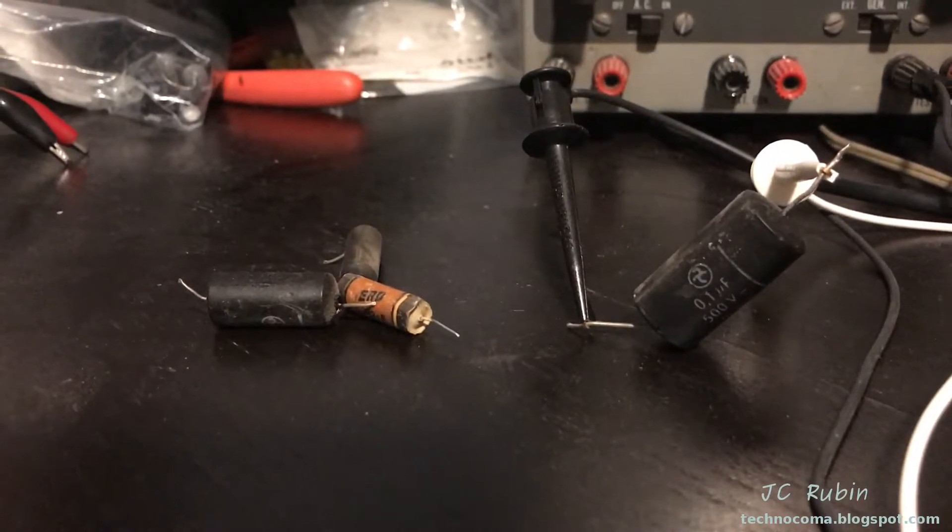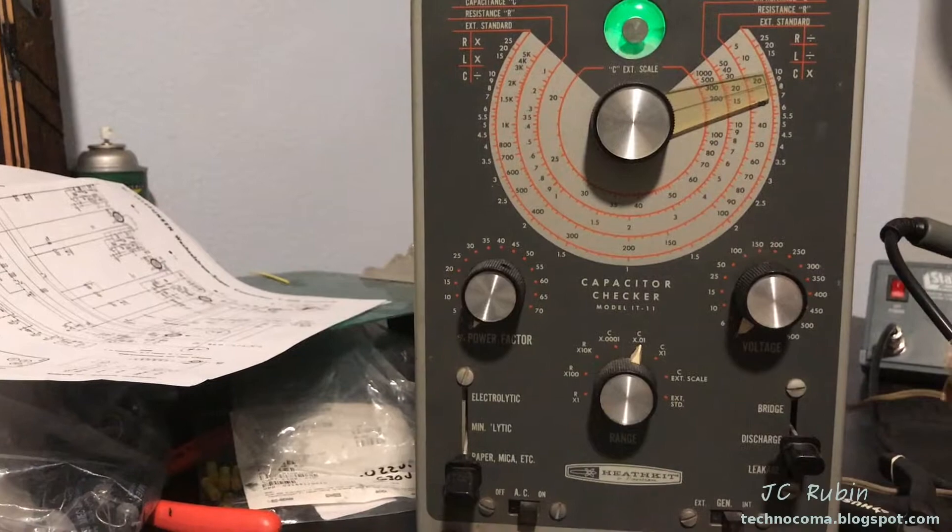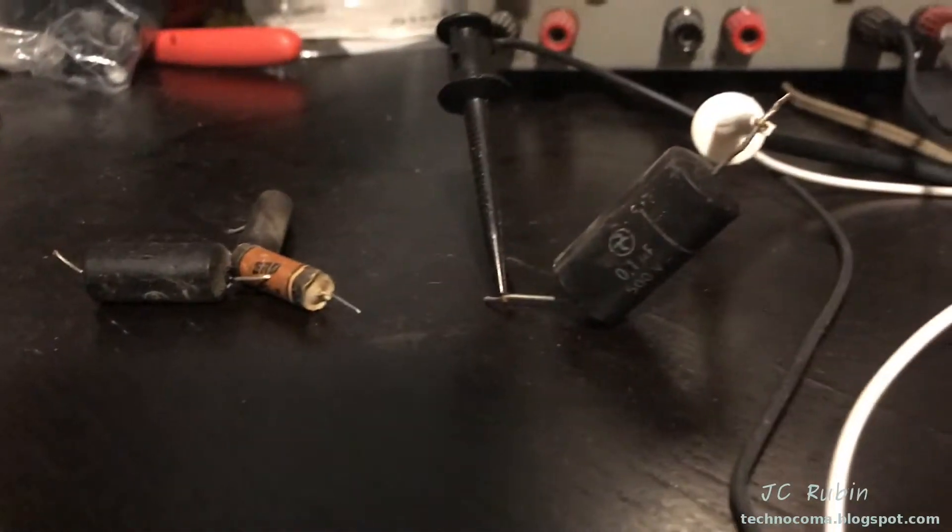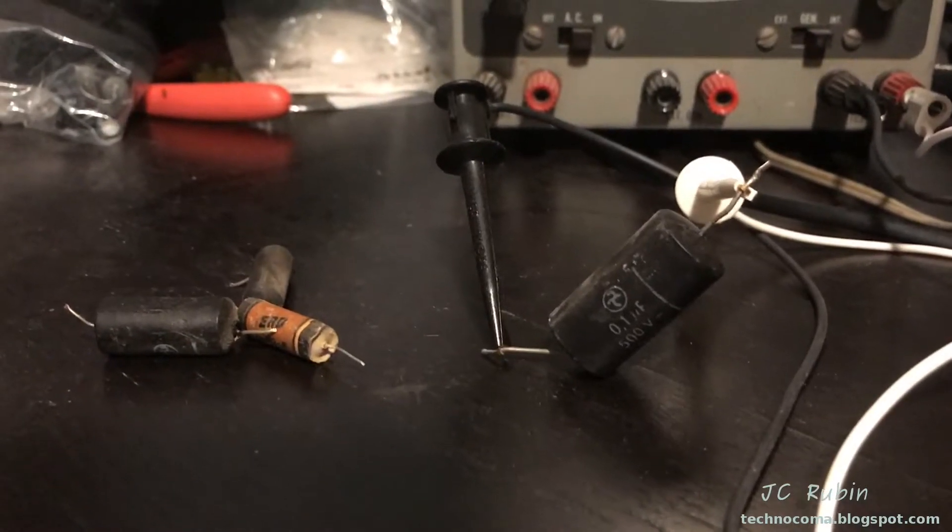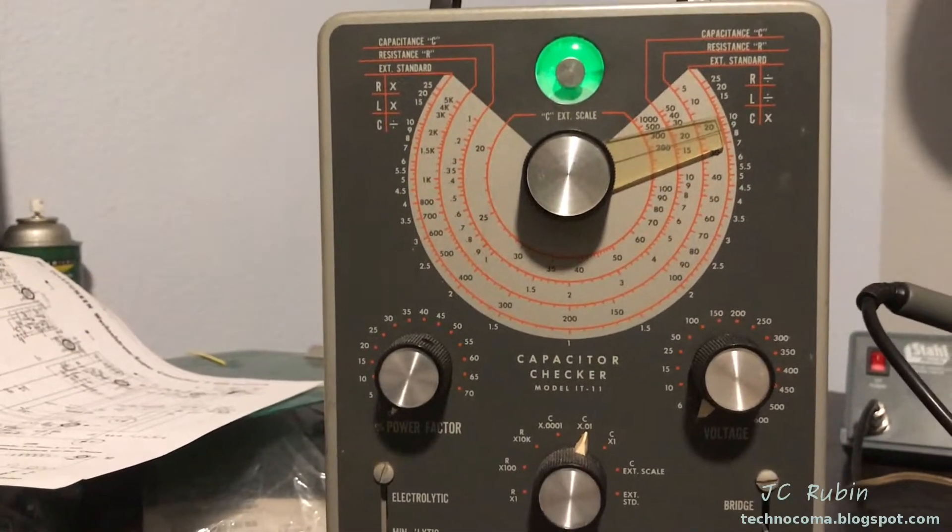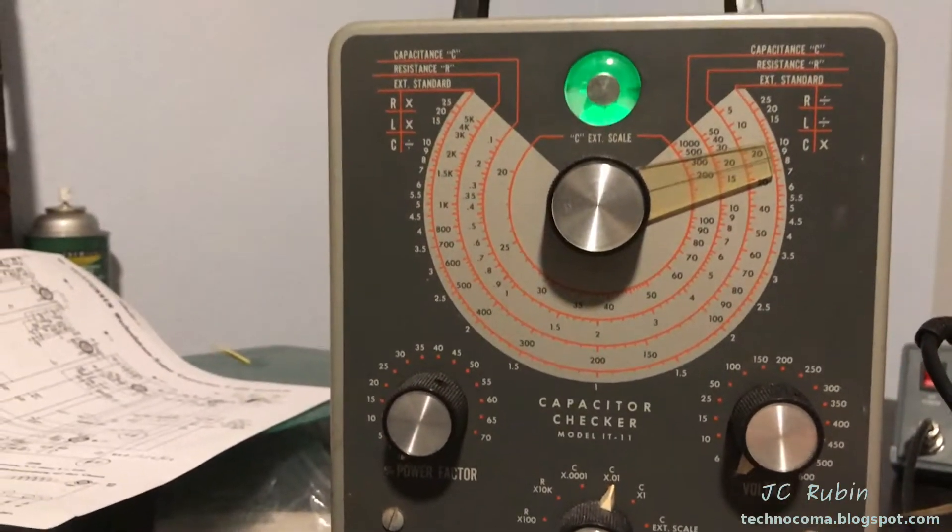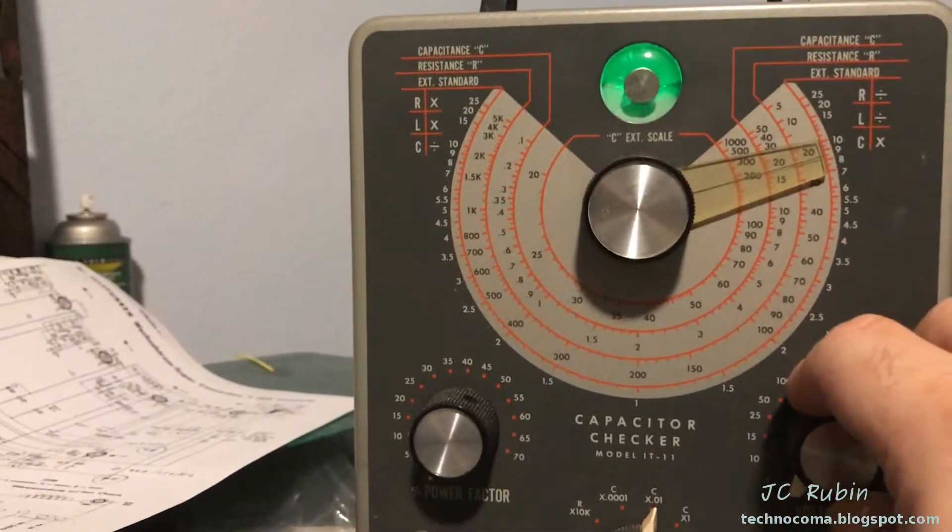It's time to see just how bad these four capacitors are. Time to put them on the IT11. I have the first one set up here. This is a 0.1 microfarad rated at 500 volts. I got it started at 3 volts and we're going to go right to leakage. We can see that it's good at 3 volts.